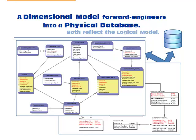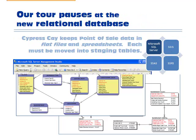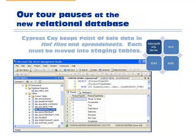We set up a database by forward-engineering the model into a physical database. This forward-engineering has created staging tables to hold Cypress Quay's flat files and spreadsheets. At our next tour stop, we will move the data into those tables.